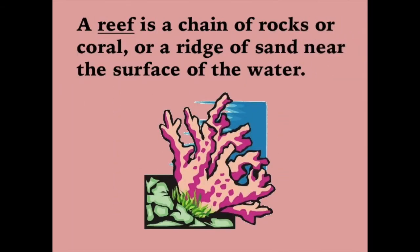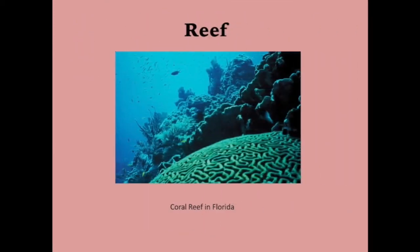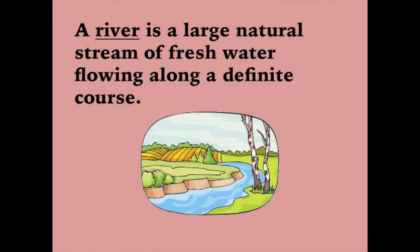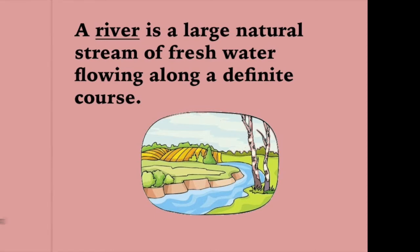A reef is a chain of rocks or coral, or a ridge of sand near the surface of the water. A river is a large natural stream of fresh water flowing along a definite course.